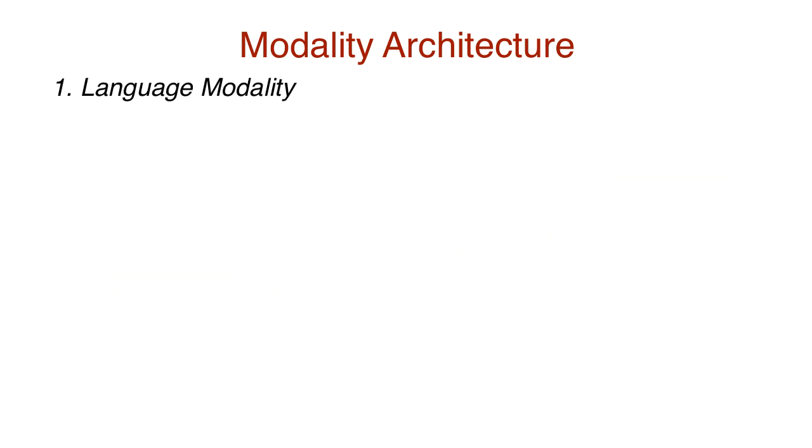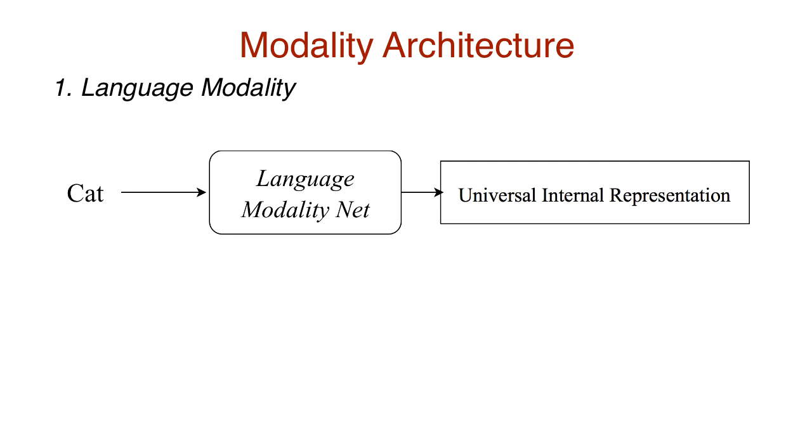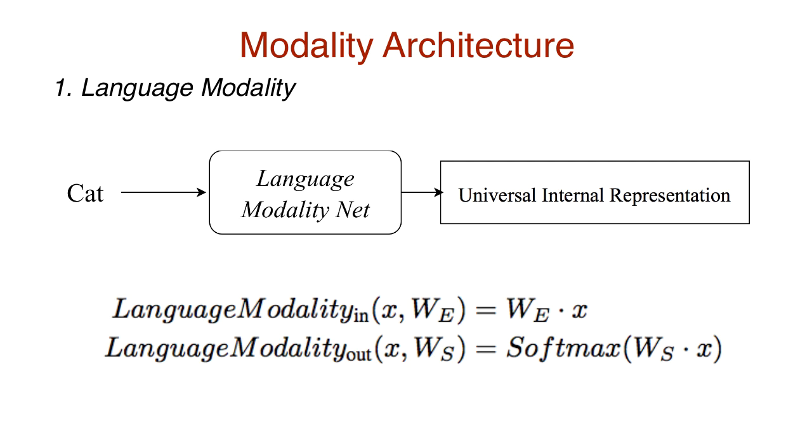With language modality nets, we convert text to a universal internal notation. Input text is tokenized into constituent subwords. Considering an 8000 subword dictionary, the subword vector is then encoded. On the output end, the modality net takes the decoded output from the multi-model neural network and performs a softmax operation to output the probability distribution that determines the most likely subword spoken. By the way, subwords can be like monophones, triphones, or syllables.